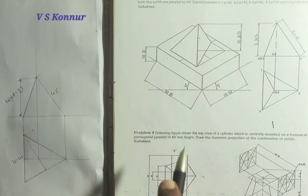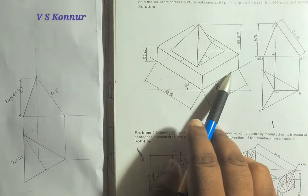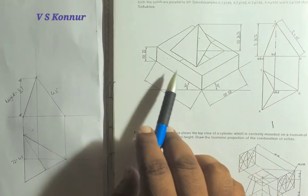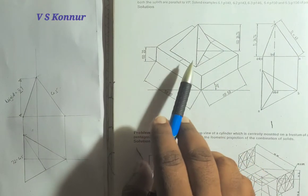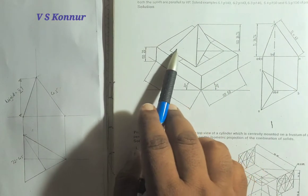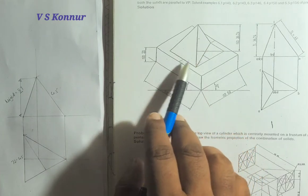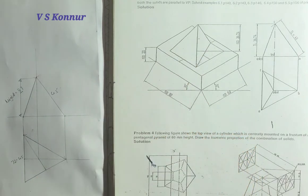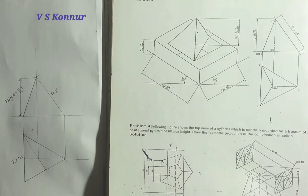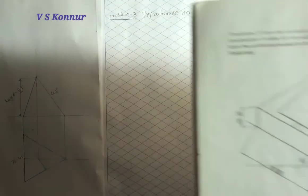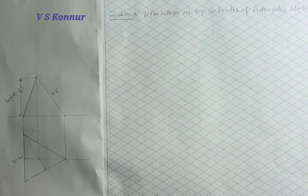You can see that the rectangular block has one side 60 and one side 80. You can take any side — 80 or 60 — but at the center you should draw the tetrahedron, which will be placed at the center of the rectangular block. First, we have to draw the bottom rectangular block.